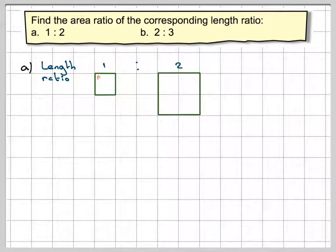What's the area of this square? Well the area of this square is going to be 1 times 1 which we can write as 1 squared which is equal to 1. And the area of this square is going to be 2 by 2 which is 2 squared which is 4. So the area ratio is 1 to 4.